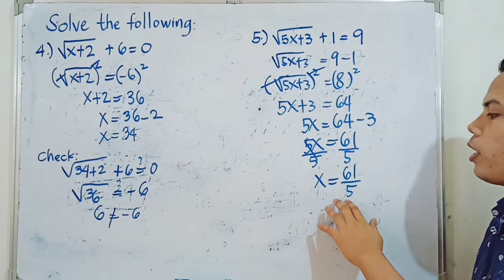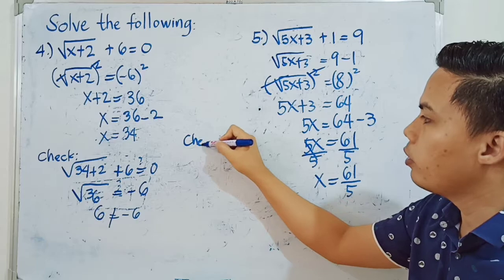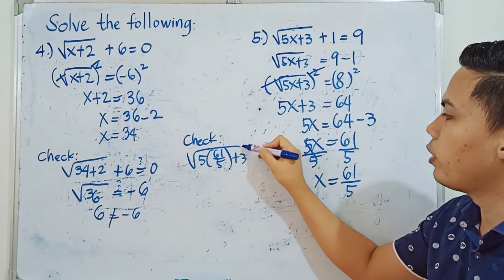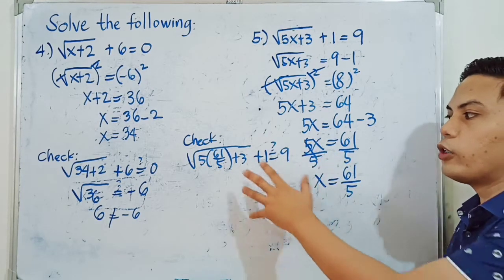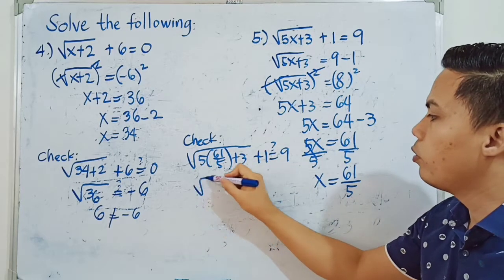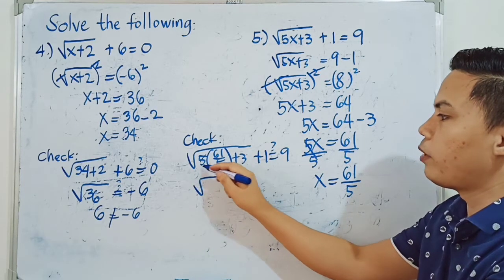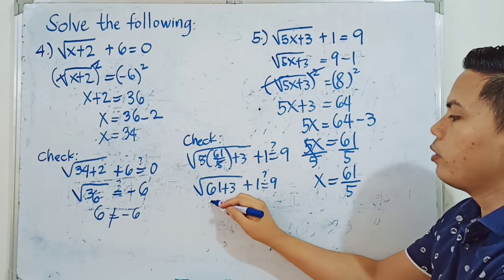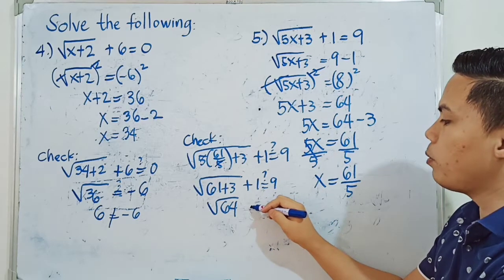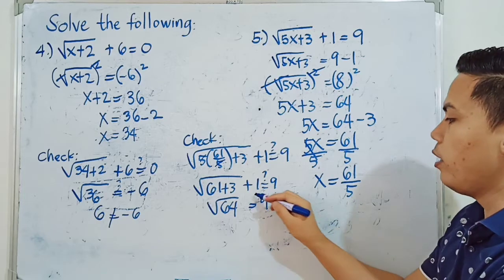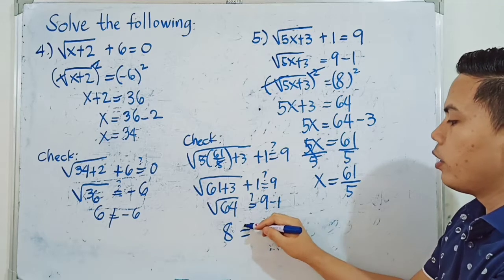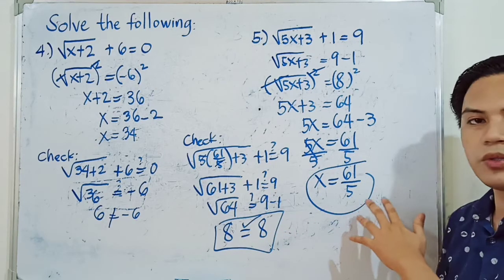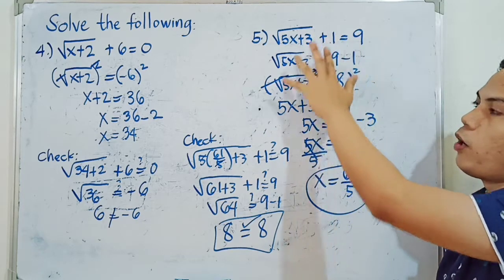Let's check if X equals 61 over 5 is correct. Substituting: 5 times 61 over 5 plus 3 — the 5s cancel — leaving 61 plus 3, which is 64. So we have square root of 64 plus 1 equals 9. Square root of 64 is 8, and 8 plus 1 equals 9. Since both sides are equal, X is equal to 61 over 5 is correct and is indeed a solution of the given radical equation.